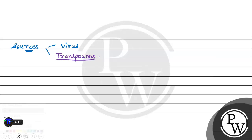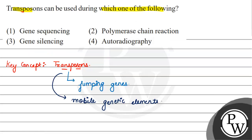The transposons are in which process? In gene silencing. So if we have options, option 1 will be wrong.